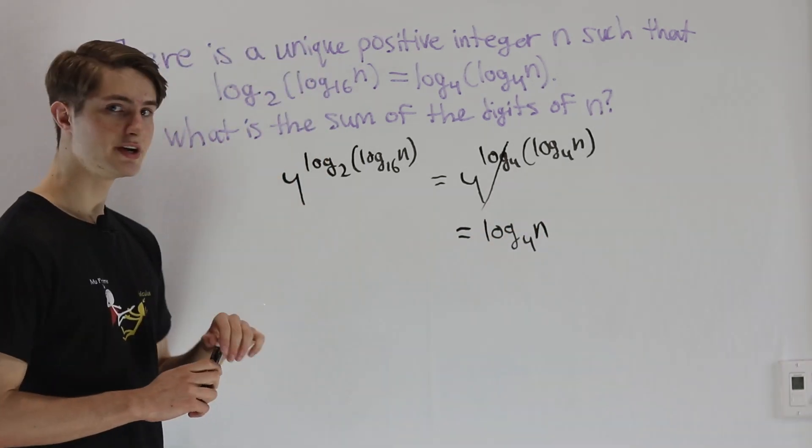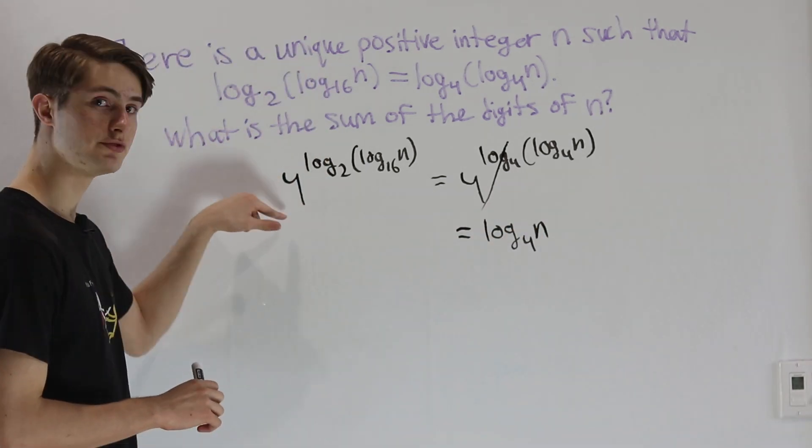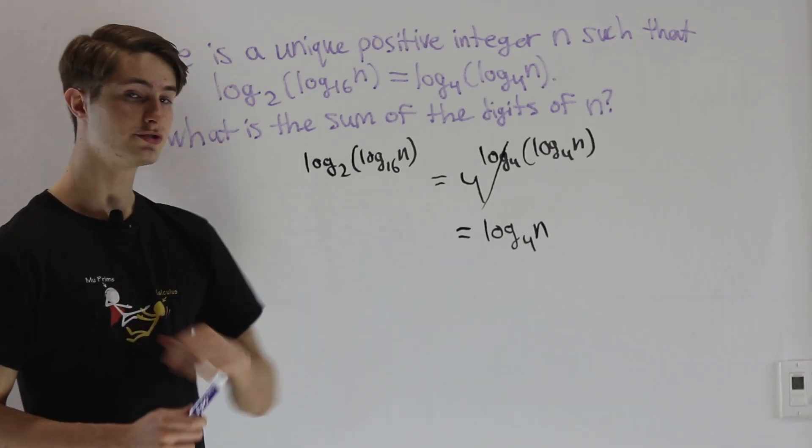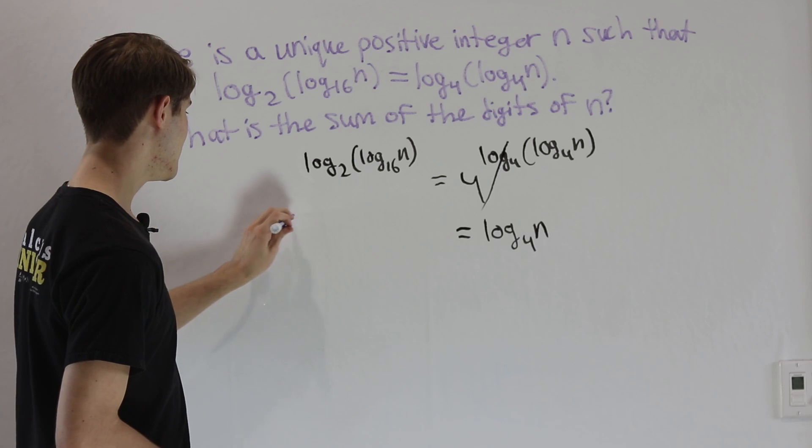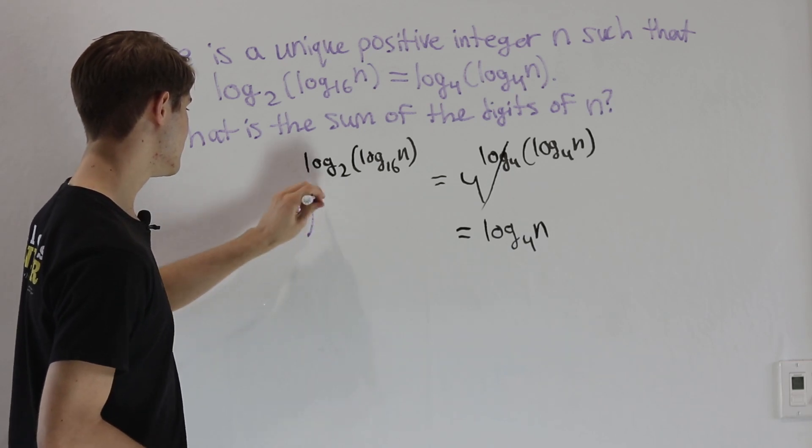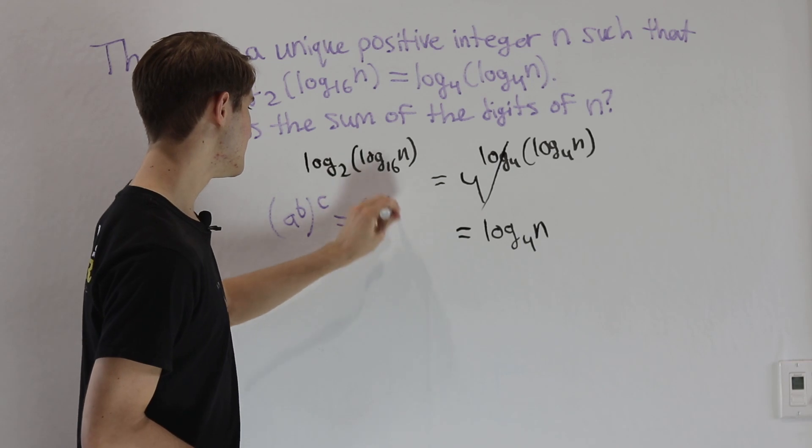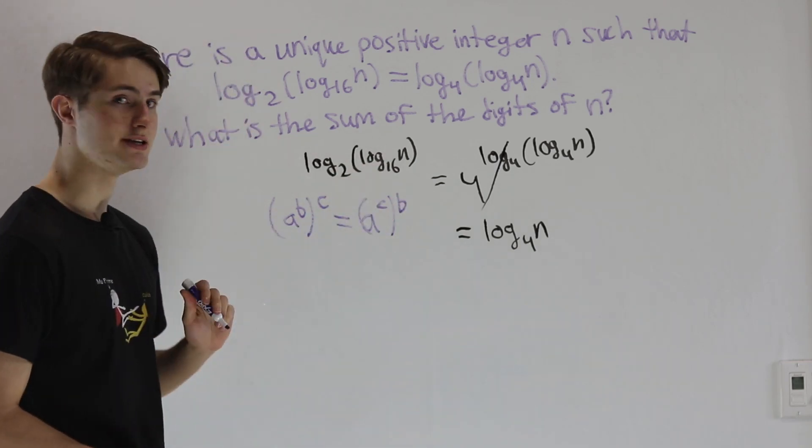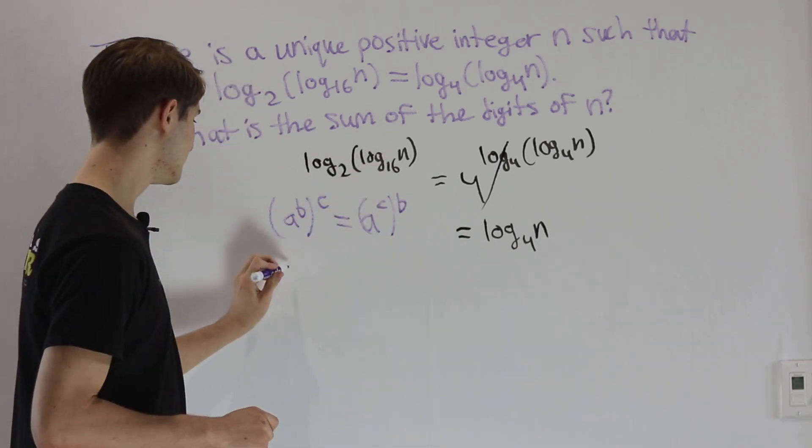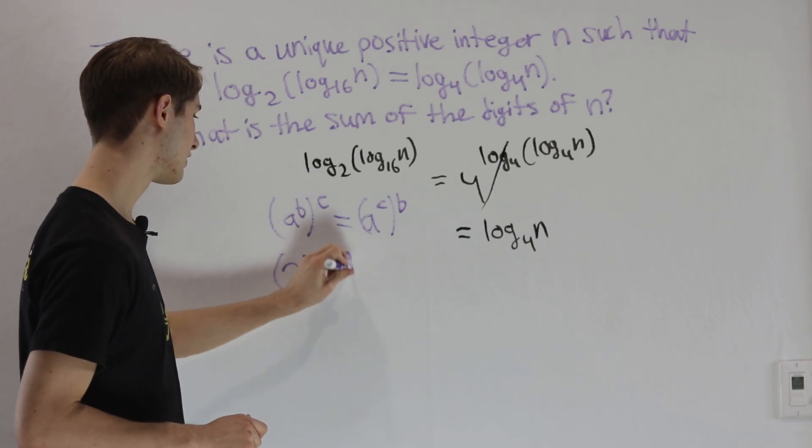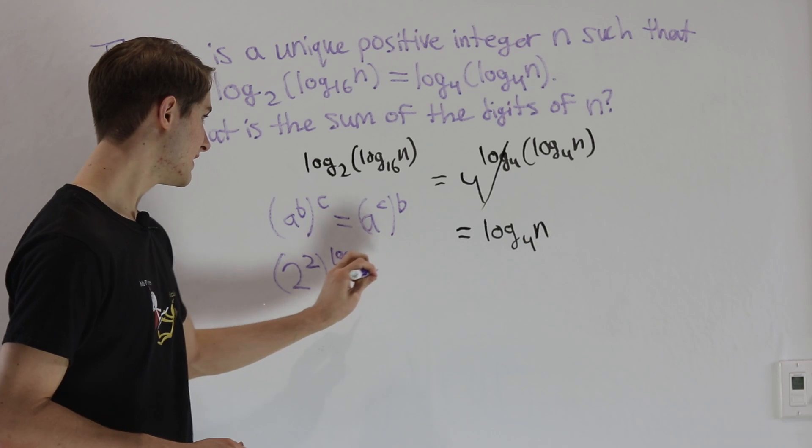On the other side of the equation, we can write 4 as 2 squared. The reason we want to turn 4 into 2 squared is that a to the b and then to the power of c is equal to a to the c and then to the power of b.